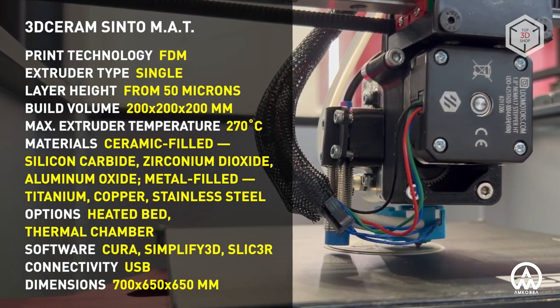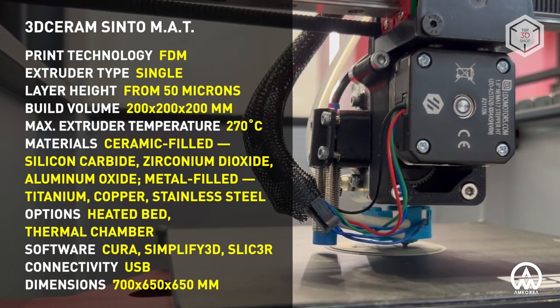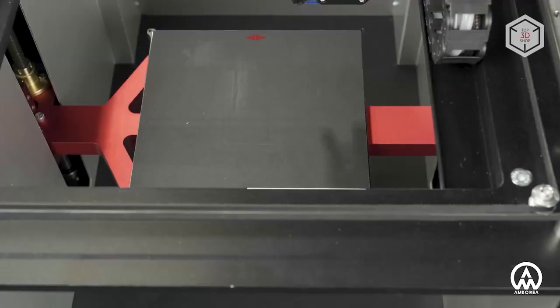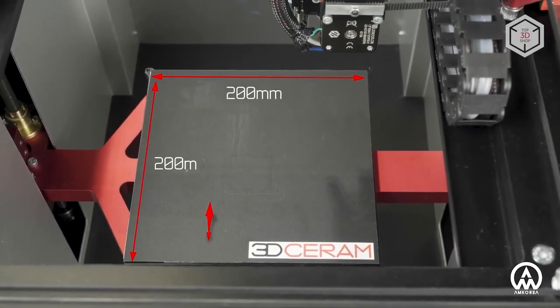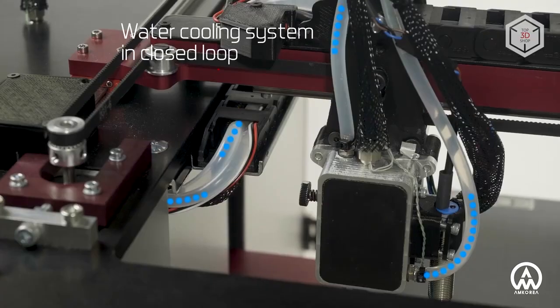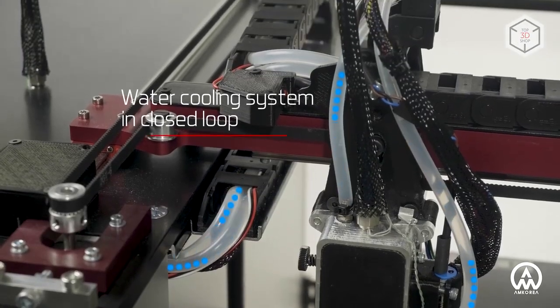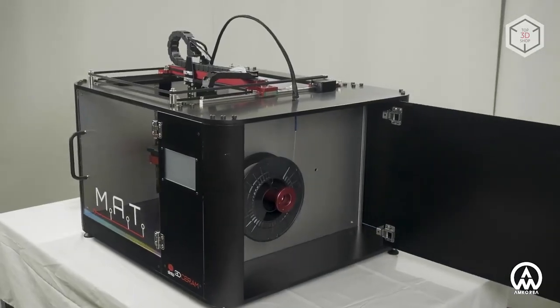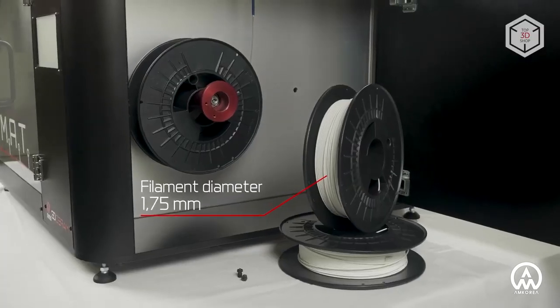For this purpose, it's possible to use auxiliary equipment by 3D Ceram Sinto or third-party companies. The build volume of the MAT 3D printer is a 200-millimeter cube. The print head is equipped with a liquid cooling system. Options include an active heating chamber and a heated plate.